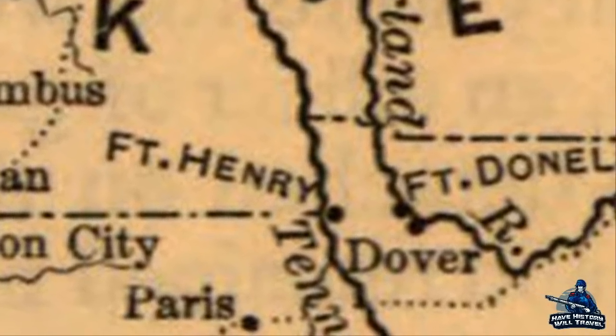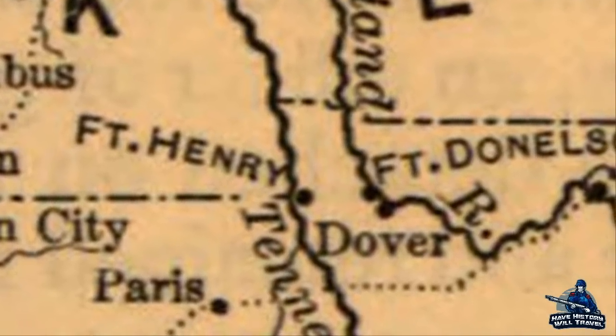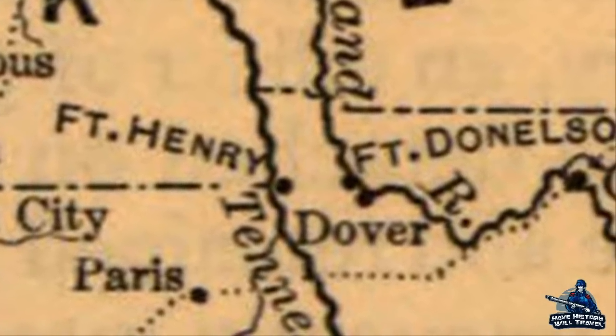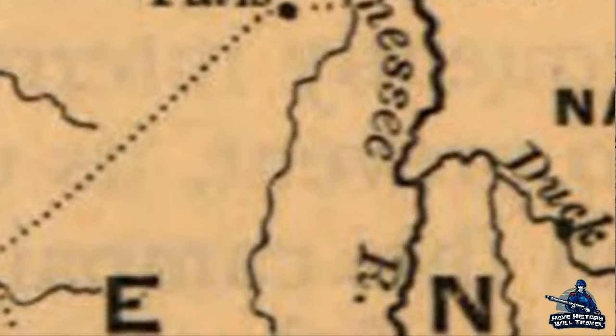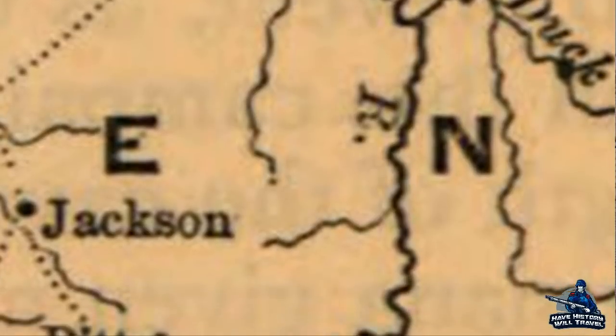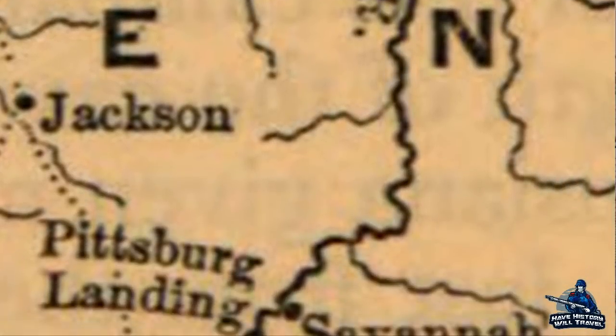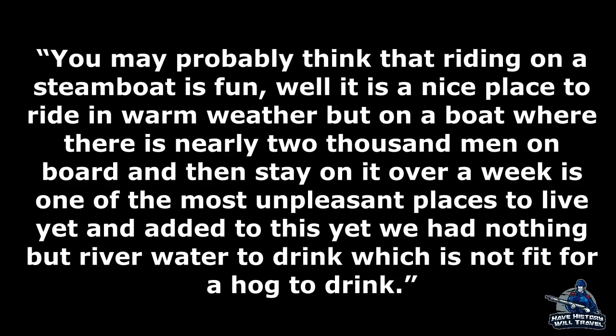The Confederates were forced to fall back to a more defensible location in northern Mississippi. But Johnston needed to land a decisive blow against the Union if he was to stop the takeover of more Confederate territory. Union forces gathered at Fort Henry to be sent by riverboats up the Tennessee River, with some troops traveling by land. The crowded boats over this long trip made the soldiers miserable. One soldier commented, 'You may probably think that riding a steamboat is fun. Well, it is a nice place to ride in warm weather. But on a boat where there is nearly 2,000 men on board...'